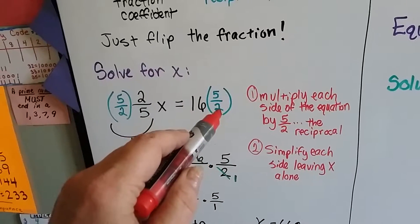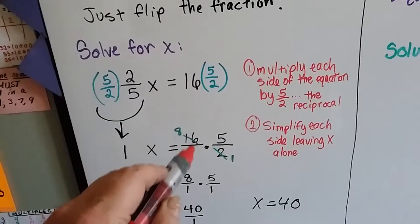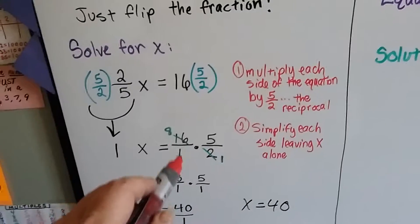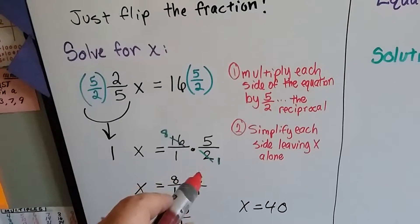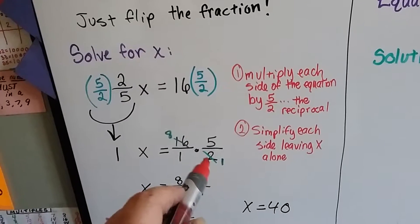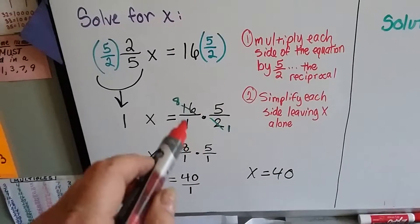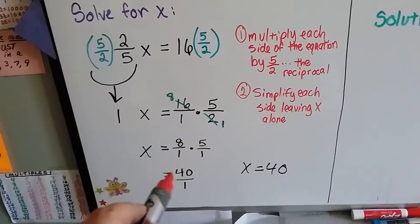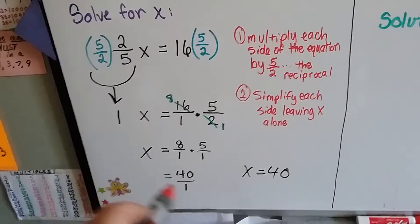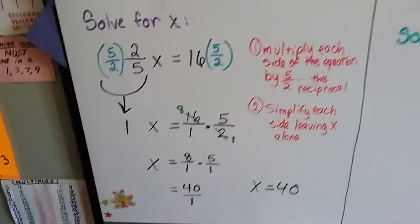Now we multiply this side by the reciprocal, the 5 halves. We're going to put 16 over 1 so that it looks more like a fraction, and we can cross out and cancel out then. So we've got 16 over 1 times 5 over 2. This 2 and this 16 can cancel each other out as a 1 and an 8, because there's 1 2 here and 8 twos here. Now we have 8 times 5 over 1, which is 40 over 1. We've now isolated x to this side by itself, and we know it equals 40.